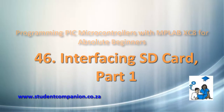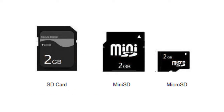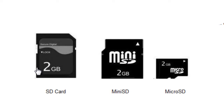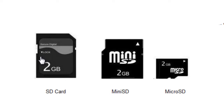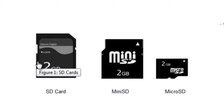In this tutorial, we're going to learn how to interface an SD card to a PIC microcontroller. A memory card, also called a flash memory card, is a solid-state electronic data storage device used for storing digital information. These memory cards are commonly used in many electronic devices, including digital cameras, mobile phones, laptops, computers, MP3 players, and so on.